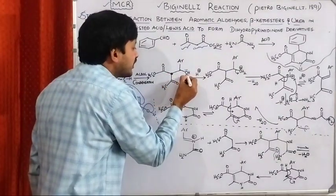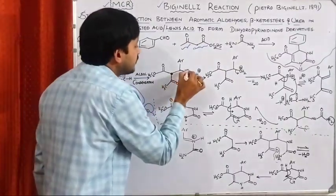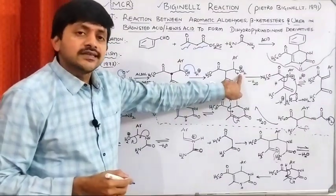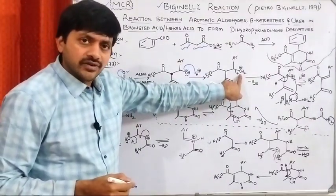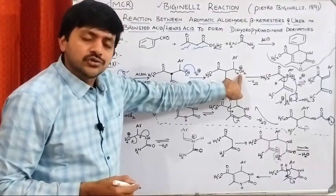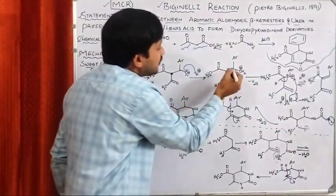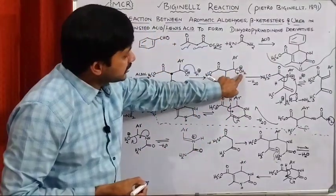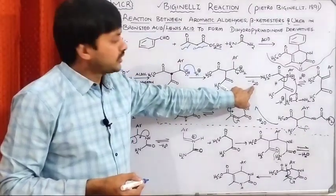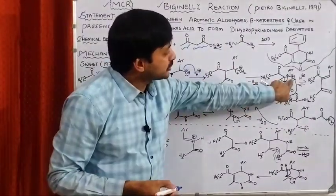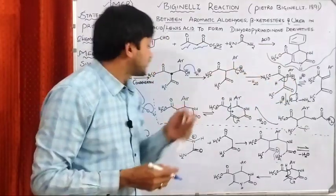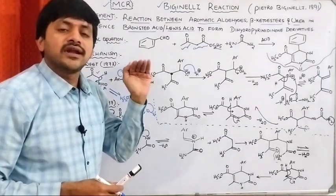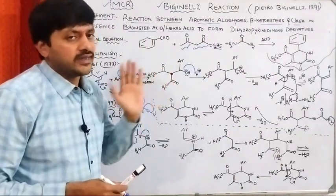Here, oxygen has a lone pair of electrons. The oxygen donates its lone pair to the proton, thereby creating OH2+. Oxygen getting positive charge means it will become electron deficient. In order to fulfill the electron deficiency, we break this single bond, creating a positive charge, and this group is removed in the form of H2O. We have created a carbocation. The Sweet mechanism says that the formed intermediate is a carbocation intermediate.